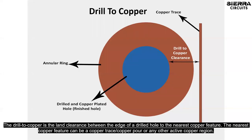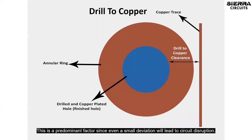The drill to copper is the land clearance between the edge of the drilled hole to the nearest copper feature. The nearest copper feature can be a copper trace, copper pour, or any other active copper region. This is a predominant factor since even a small deviation will lead to circuit disruption.